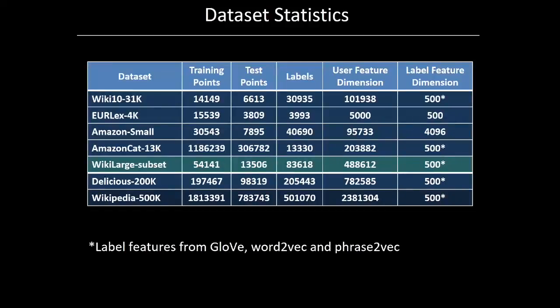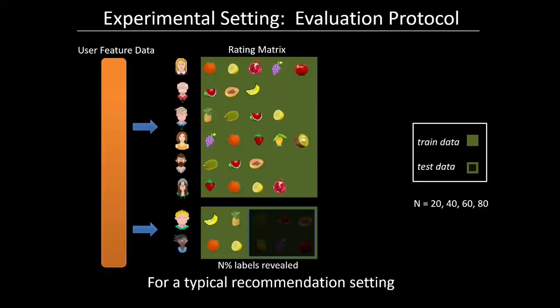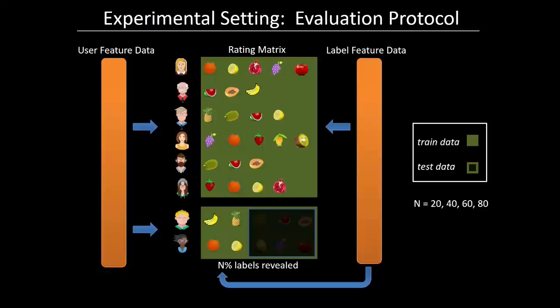Now let's move to the experiment section, where I will be presenting results and comparing against existing approaches — baseline classifiers from recommender system settings as well as extreme classifiers which don't make use of label features. The datasets we used have training points ranging from 14K to 1.8 million, and labels ranging from 3K to 0.5 million. Since we are dealing with a warm start scenario, for test users we reveal n percent of labels. We run experiments by revealing 20 percent, 40 percent, 60 percent and 80 percent of labels for test users. So the inputs are: user feature data, label feature data, a full training matrix, and n percent revealed labels of test users.